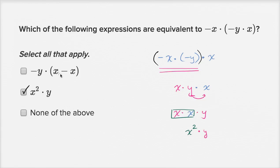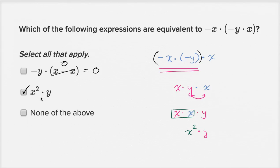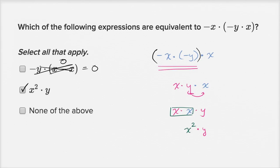Now one of the choices actually evaluates to a number — because regardless of what x you pick, x minus x is going to be zero, and zero times anything is going to be zero. So that expression equals zero, which is different from what's going on here, so I definitely would not pick that.